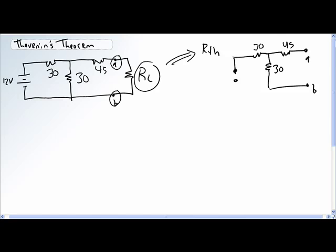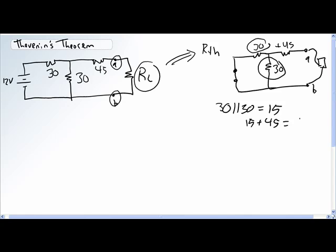Keeping our terminals A and B, we're going to replace the source with a short circuit. Put our ohm meter right here. What do we measure? It looks like it's a 30 in parallel with the 30 plus 45. So 30 in parallel with 30 is equal to 15, and then 15 plus 45 equals 60 ohms. So RTH equals 60 ohms.